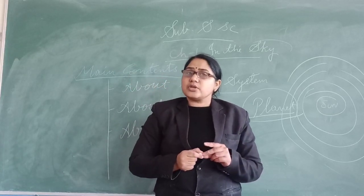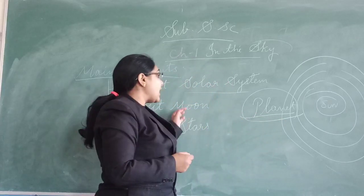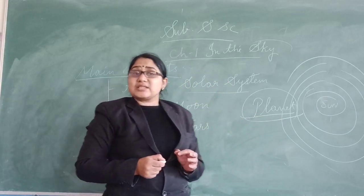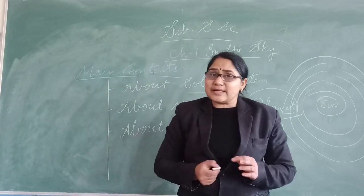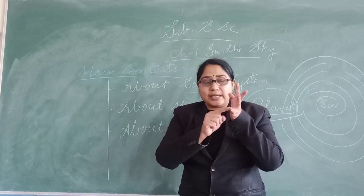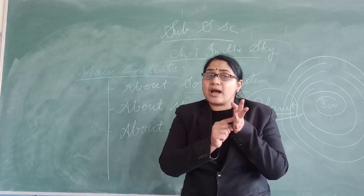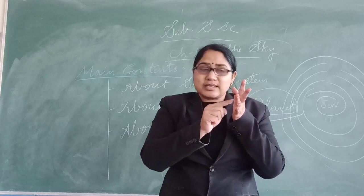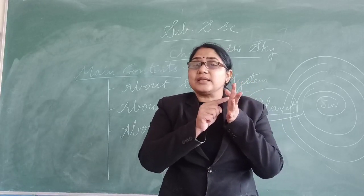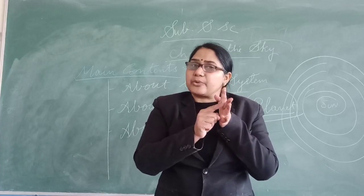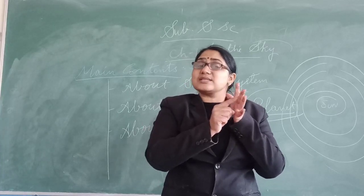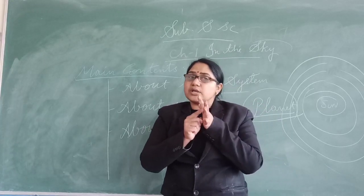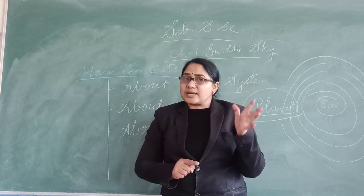How many planets are there in the solar system? With the sun, there are eight planets: Mercury, Venus, Earth, Mars, Jupiter, Saturn, Uranus, and Neptune. Neptune is the last one.